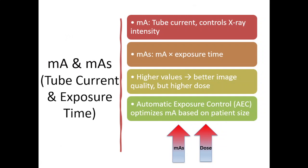mA represents the tube current, and mAs is the product of mA and exposure time in seconds. Higher values improve image quality, but also increase radiation dose. To balance image quality and dose, modern CT scanners use automatic exposure control, or AEC, which adjusts these values based on patient size.